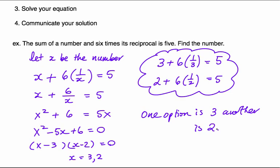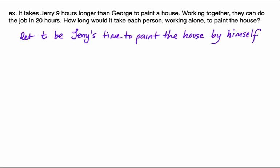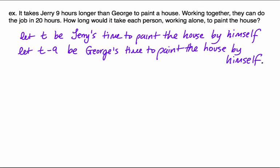Let's go take a look at another example and walk through these four steps. So in this example it takes Jerry nine hours longer than George to paint a house. Working together they could do the job in 20 hours, paint the whole house. How long would it take them working alone to paint the house? So again, set up our variables. I'm going to say t is the amount of time it takes Jerry to paint this house by himself. And Jerry takes a lot longer than George, so George will take less time to paint the house, in fact 9 hours less, so I'll write a let statement for that. And I use t minus 9.